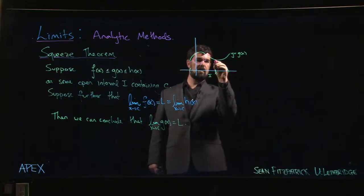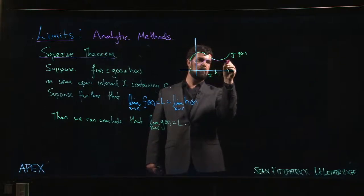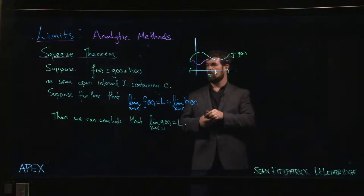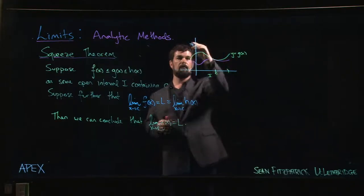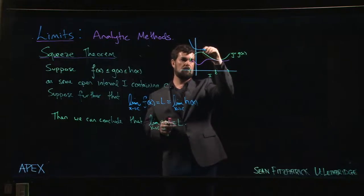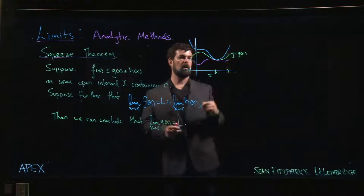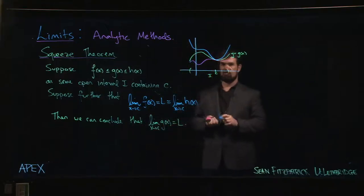And f happens to be a function which is always less than g of x. And at this point c, it does something like that. H of x is a function that's always bigger than g of x. And again, at that point c, it approaches the same value.